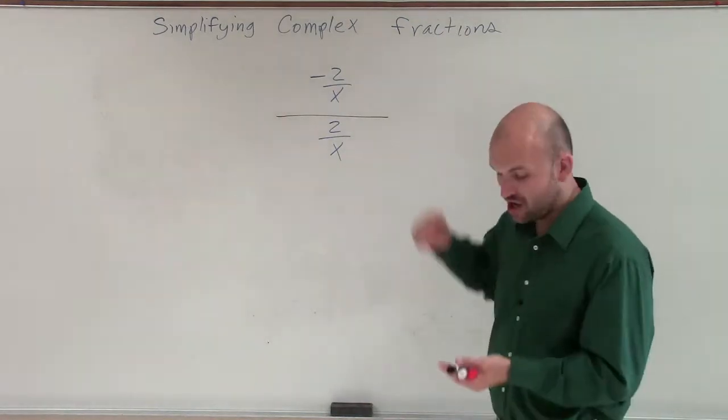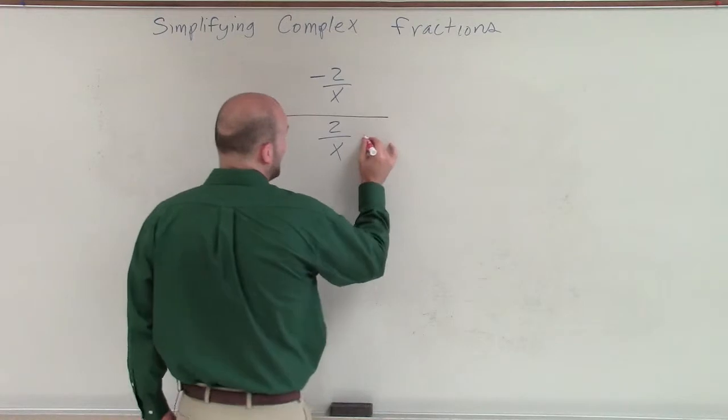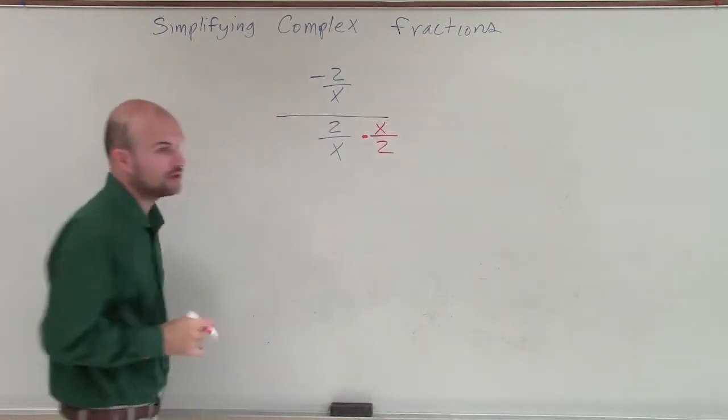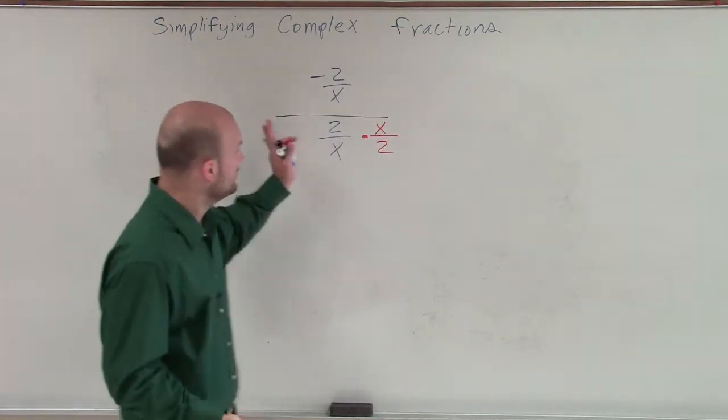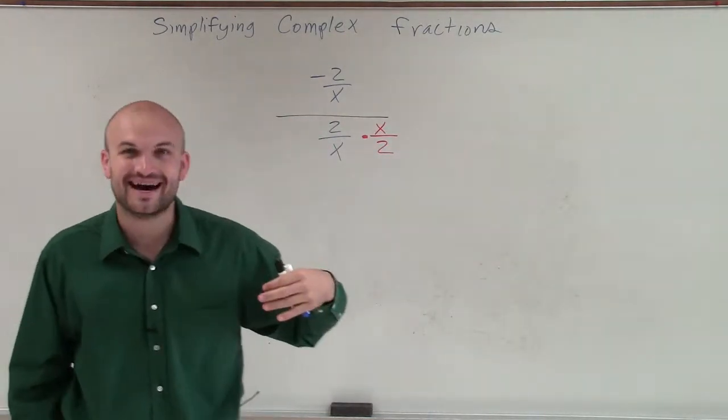So what we're going to do to get this off of the bottom is we're just going to multiply by the reciprocal. Because we know that any number multiplied by its reciprocal, we know it's going to multiply to 1. So if I multiply this, now I'm going to have that multiplied to 1.